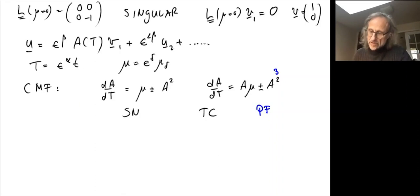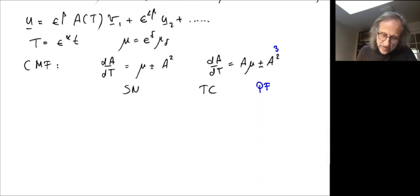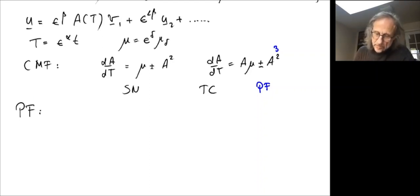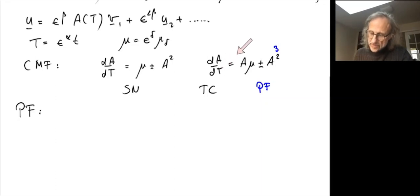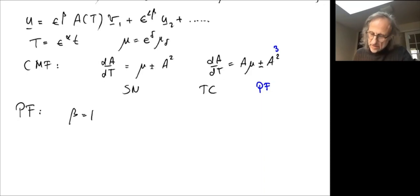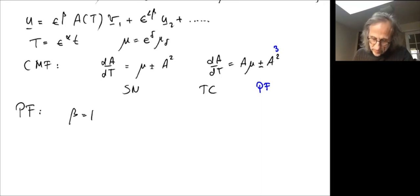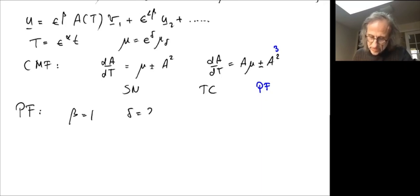Let's do it for our example, which we know has a pitchfork bifurcation. The center manifold equation has a cubic term, so mu has to be of the same order as A squared, and the time derivative has to be the same order as mu. If we pick beta equals one — meaning A is order epsilon — then delta will be 2 and so will alpha.